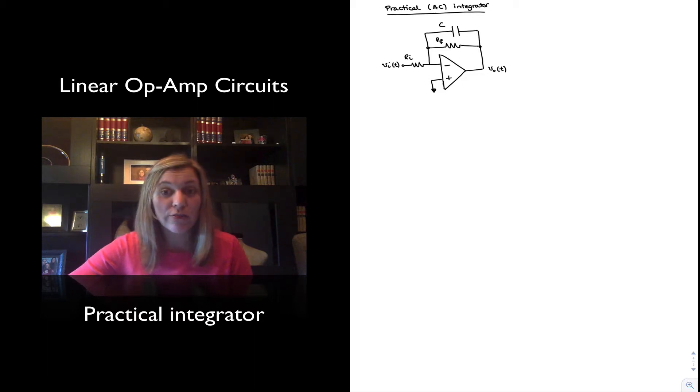By introducing the RF resistor, you prevent a saturation problem, because even at DC frequencies there will always be a path for the current to go, so you'll never be operating in open loop.